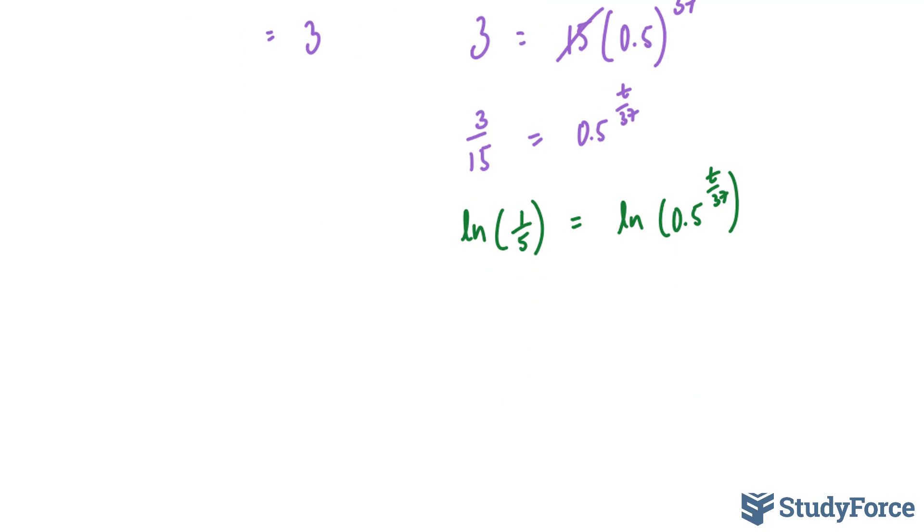Now remember, the power rule of logs says that you can take this power and put it at the front. So we have t over 37, ln 0.5, and on the left side, ln of 1 over 5.